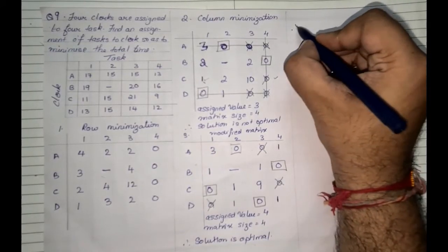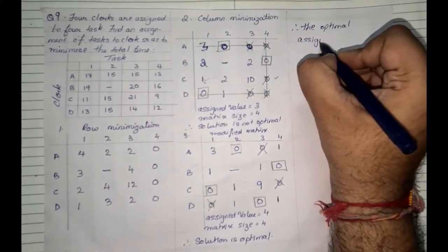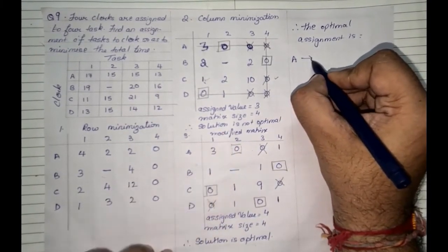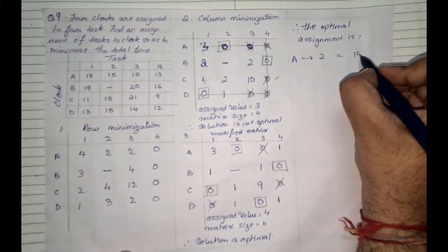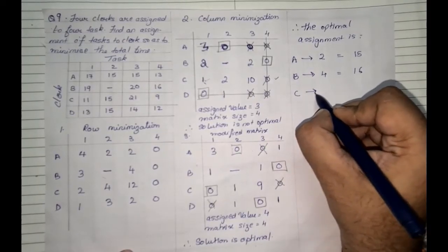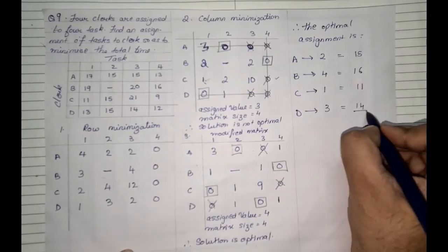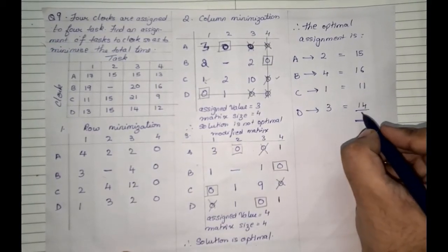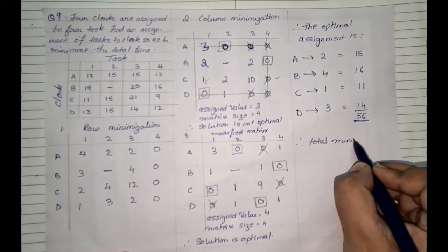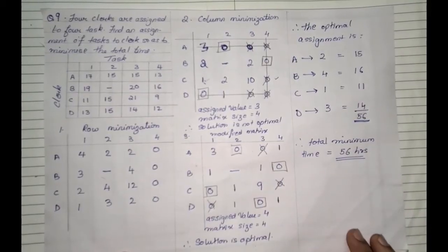Once the solution is optimal, we write the final answer. The optimal assignment is: Clerk A is given Task 2, for which the value is 15. Clerk B is given Task 4, which is 16. Clerk C is given Task 1, which is 11. Clerk D is given Task 3, which is 14. Adding up: 15 plus 16 plus 11 plus 14 equals 56. Since it is a minimization sum and nothing else is mentioned, the total minimum time is equal to 56 hours.